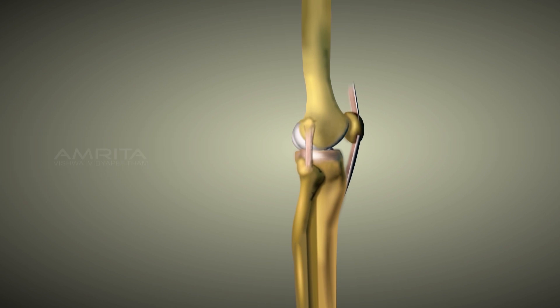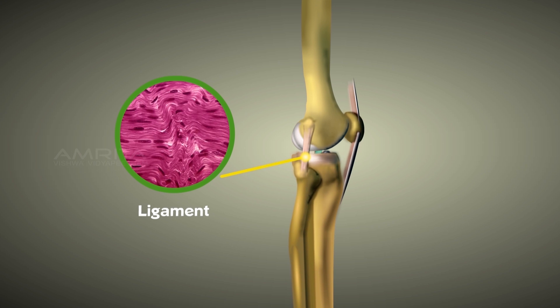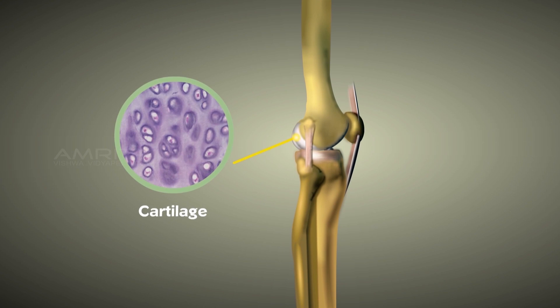Ligaments function as a connection between bones. They are fibrous and stretchy. Cartilage protects bones by preventing them from rubbing against each other. It is a tough but flexible tissue.